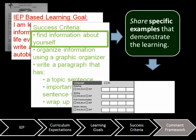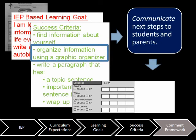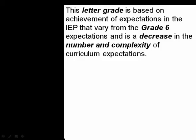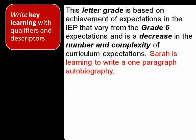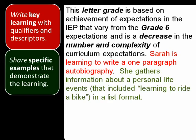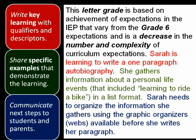Then we identify specific criteria with examples that demonstrate this student's learning. Finally, we share next steps for this student that are based on the criteria not yet met. For the comment, we begin with the IEP statement that has been customized to reflect this student's IEP. The comment goes on to include Sarah's key learning, her strengths with specific examples, and clear and attainable next steps. In a well-developed personalized comment, students will see themselves and parents will recognize their child.